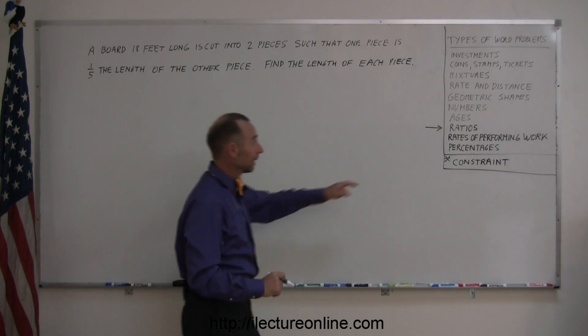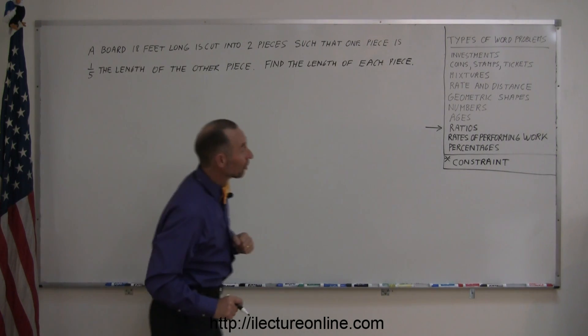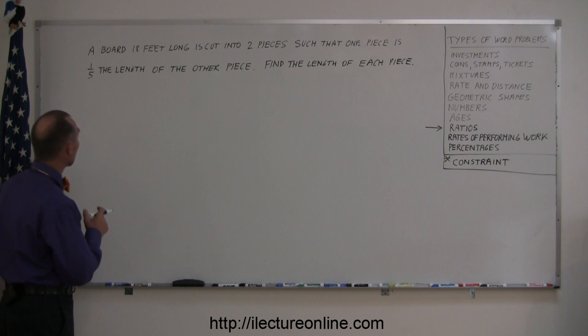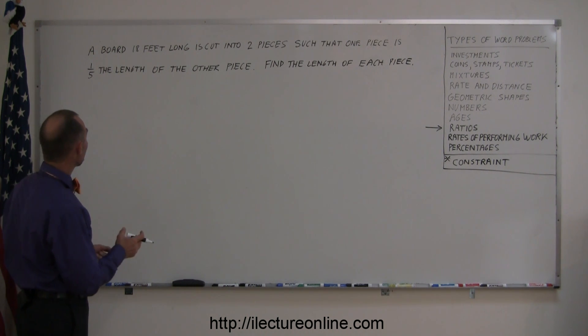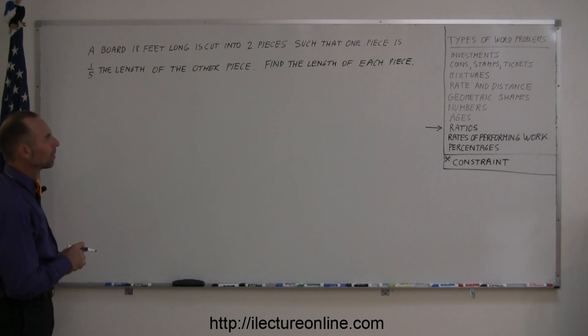In this case we're going to do a problem dealing with ratios, and here's a good example for you. A board 18 feet long is cut into two pieces such that one piece is one-fifth the length of the other piece. Find the length of each piece.